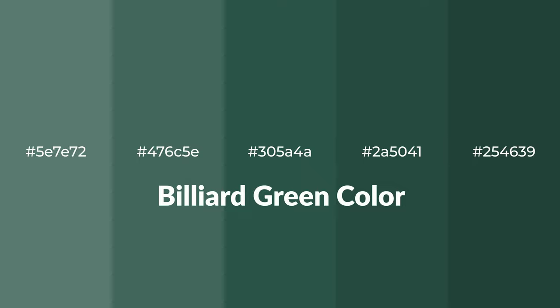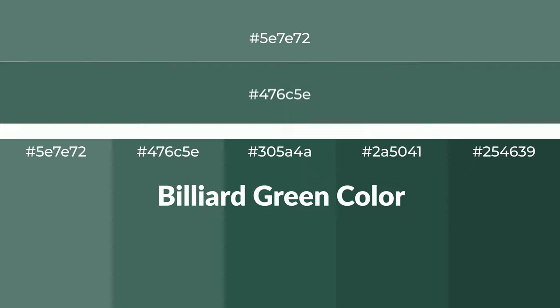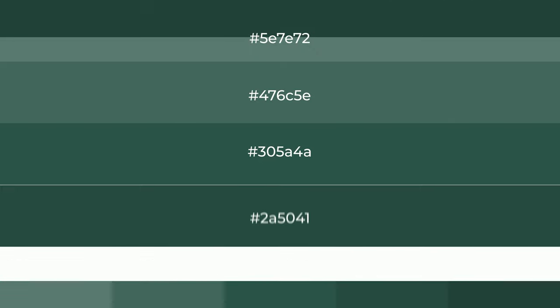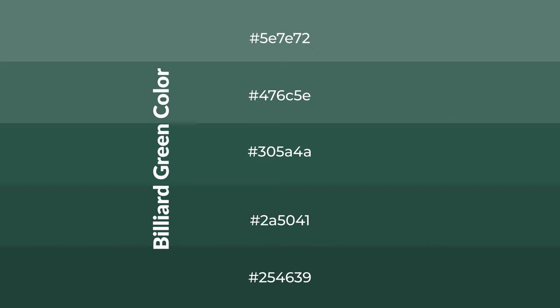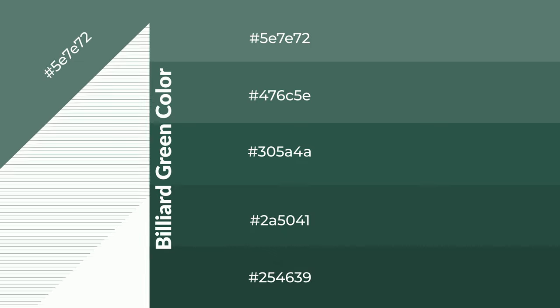Cool shades of billiard green color with green hue for your next project. To generate tints of a color, we add white to the color. Tints create light and exquisite emotions. To generate shades of a color, we add black to the color, and it is used in patterns, 3D effects, layers, and shades to create depth and drama.